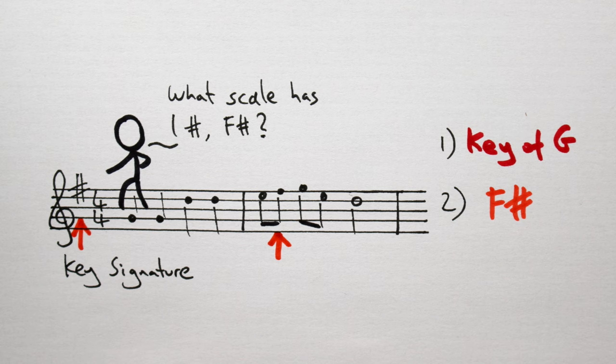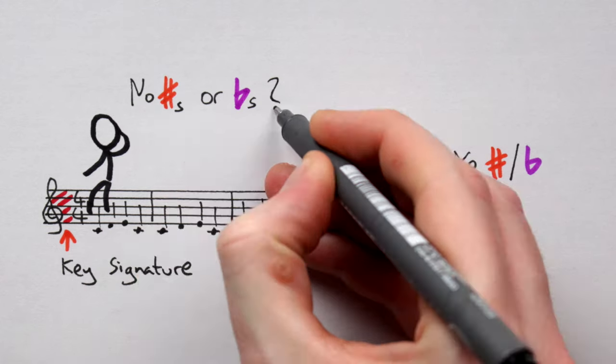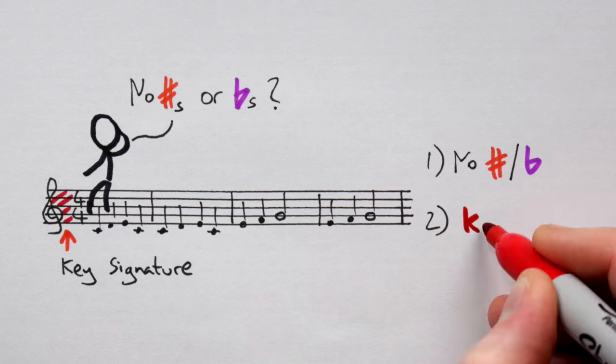And this works for other keys too. The key signature of this tune is empty. So there are no sharps or flats in this tune. What scale has no sharps or flats? C major. So we're in the key of C major.